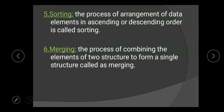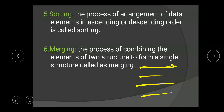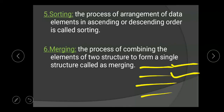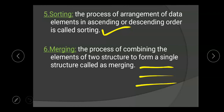Fifth is sorting — the process of arranging elements in ascending or descending order is called sorting. If a data structure has data in random order — student name, student age, marks, roll number — and we want to arrange it in a particular order (ascending or descending), we use the sorting operation.